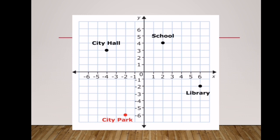If I ask you what are the coordinates of city hall, then from the origin you have to move four places to the left and then three places upward along the y-axis. So the coordinates of city hall are going to be (-4, 3), written within brackets. This is how we determine the coordinates of a point.